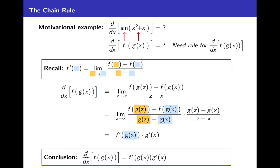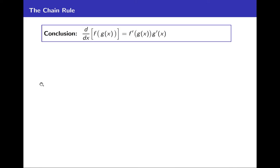Let's summarize in our conclusion. We've just figured out that the derivative of f of g of x is f prime of g of x times g prime of x. This is a quick verification of our new rule. The derivative of f of g of x equals f prime with g of x plugged into it, times g prime of x.